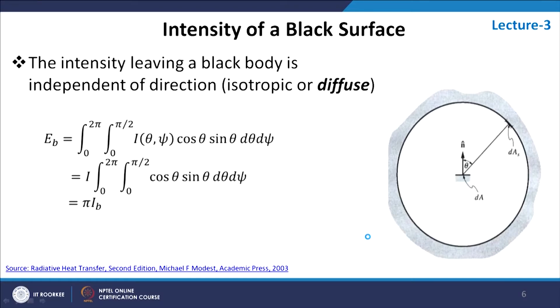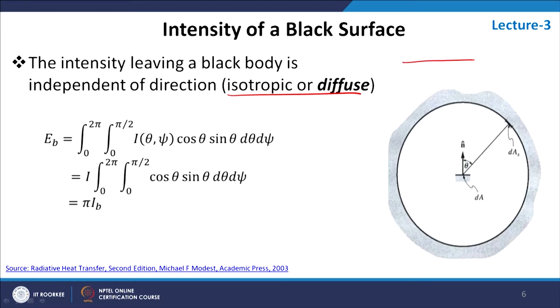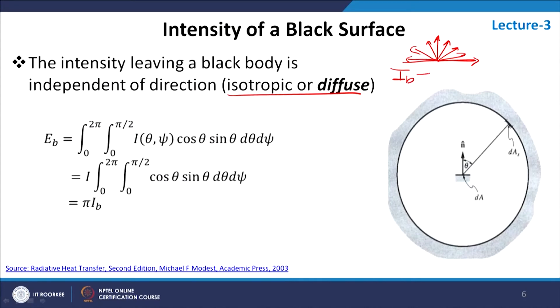Now, regarding the intensity leaving a black body — this can be proved using Kirchhoff's law. What we know about black body intensity is that it is isotropic or diffuse, meaning the intensity leaving a black body is the same in all directions. A black body emits equally in all directions. Although it is not practically true because no body can emit radiation parallel to the surface, for theoretical purposes we assume a black body is isotropic. So the intensity of a black body does not depend on the two angles theta and psi — that is, polar angle and azimuthal angle.